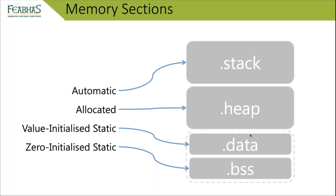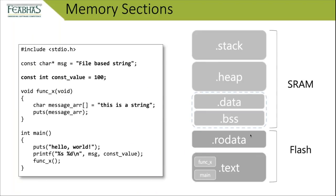For both the .data and .bss regions, we know the sizes at link time — accumulated across all C files and library files. They all have fixed addresses. The name .bss is historic, dating back to the PDP-10/PDP-8 era, and stands for 'Block Started by Symbol' — an old assembler instruction. Looking at our program sections, we have stack, heap, .data, .bss, plus two more important sections to be aware of.